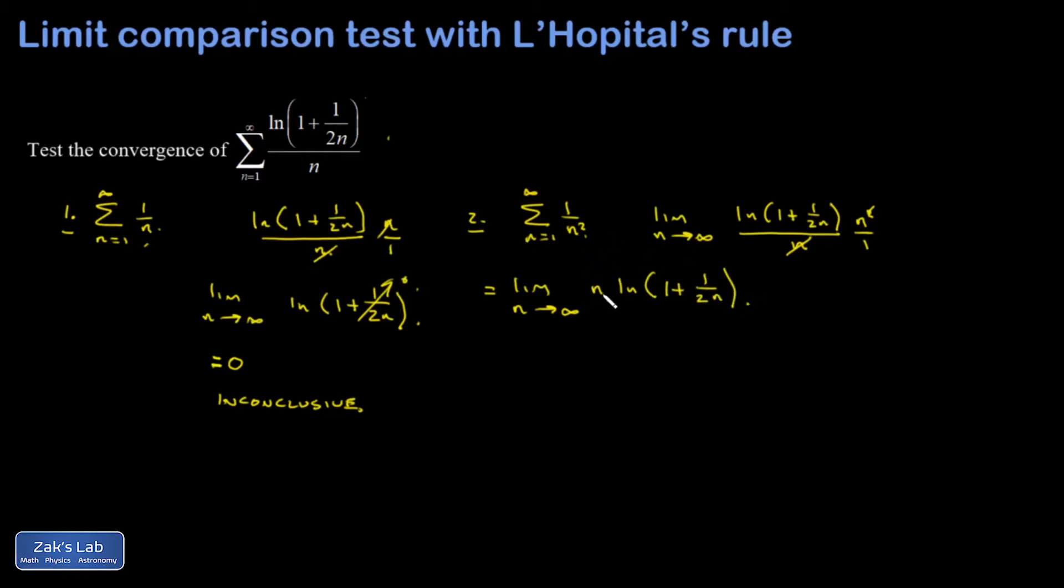And this n is growing to infinity. And the natural log part is getting close to natural log of 1, which would give you a 0. So this is an infinity times 0 indeterminate form. How do you handle these things? We look at it with L'Hopital's rule, and we have to manipulate it to be a fraction instead of a product.